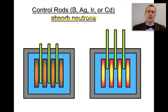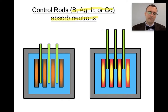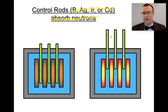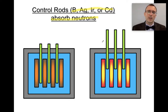Control rods can be made of a number of different materials — boron, silver, iridium, cadmium, or some mixture of two or more of those. You have active control over this, so you have to actively put them down or pull them out. If you lose power, you might have problems, but hopefully your nuclear power plant would have something in place so that if power is lost, these would automatically fall down in order to slow down the reaction.